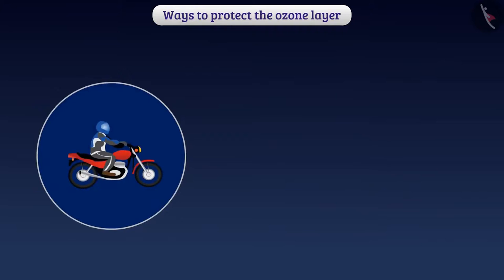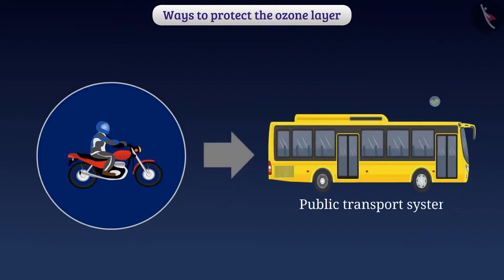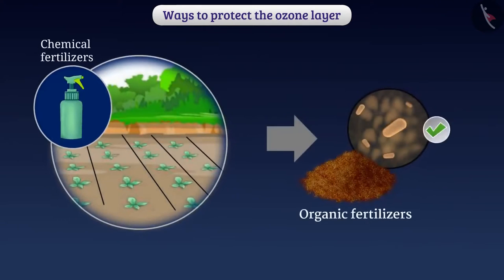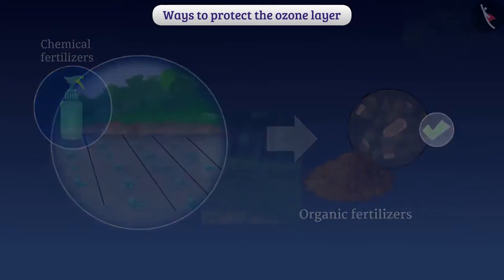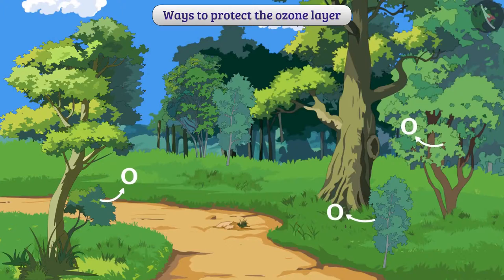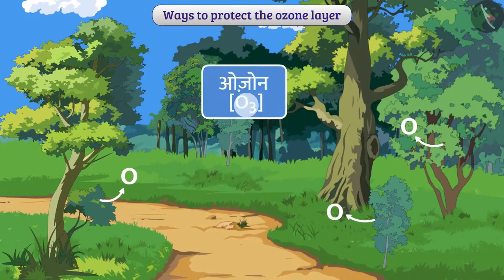We can reduce the use of vehicles. For this, we can use public transport systems. In farming, we can use organic fertilizers instead of chemical fertilizers. Planting trees will generate more oxygen, which will be helpful in ozone formation.